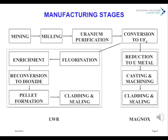Most uranium ores are not only distant from manufacturing plant, but of very low content. To avoid transporting the vast amount of valueless material, they are locally milled to produce a uranium ore concentrate, or yellow cake, for export. After delivery, this is carefully purified and converted to uranium tetrafluoride. For Magnox, this was reduced directly to metal, cast into rods, machined to fit into the cladding, and then sealed.